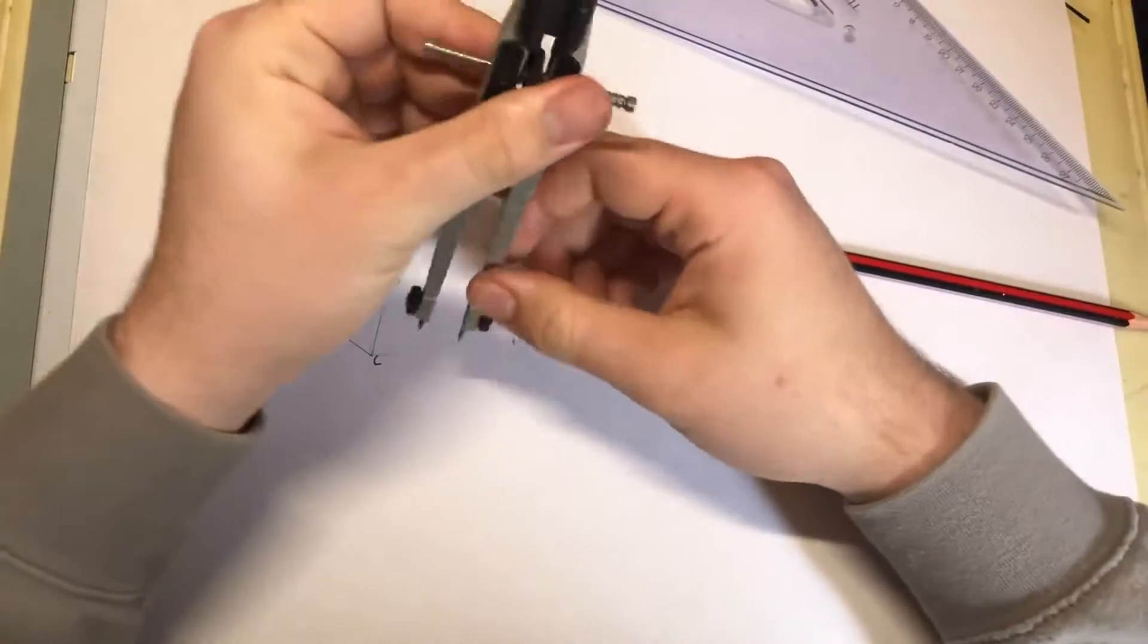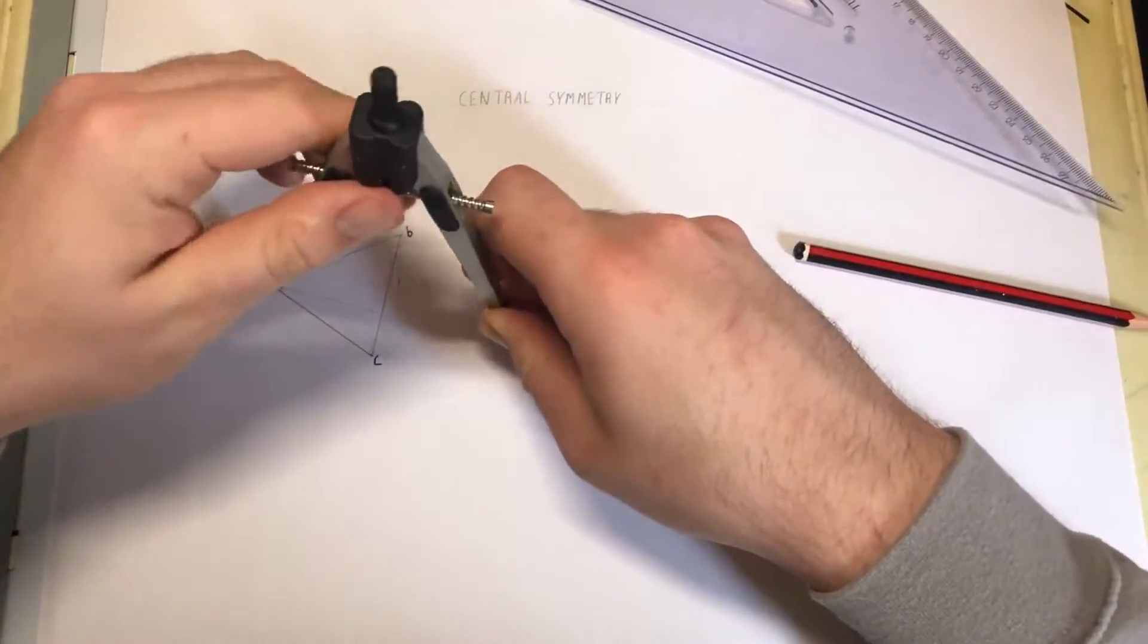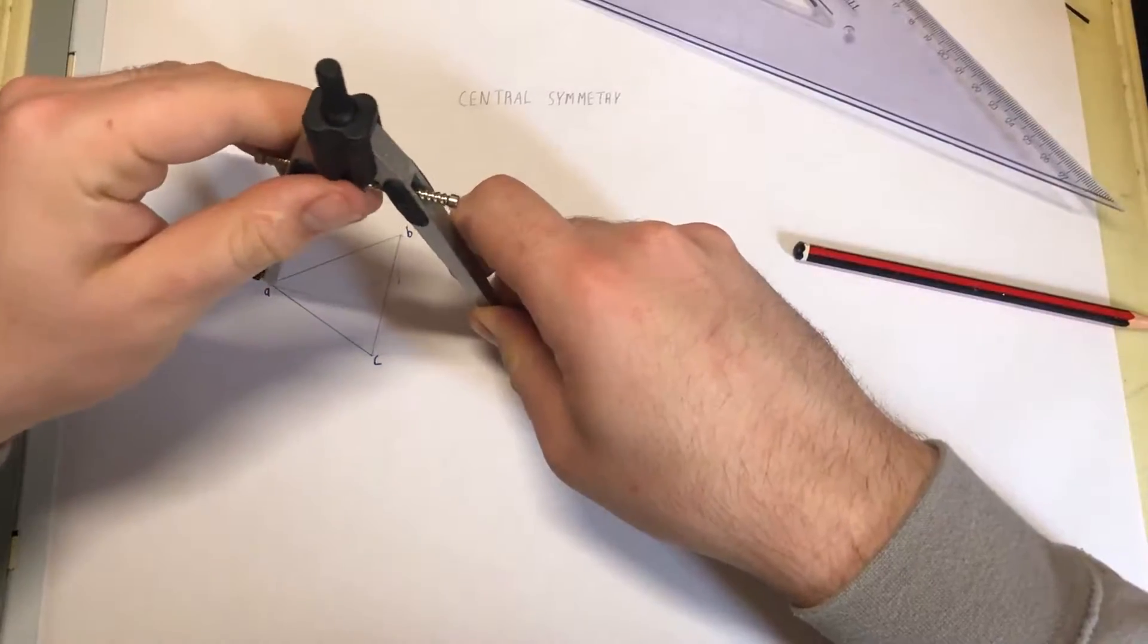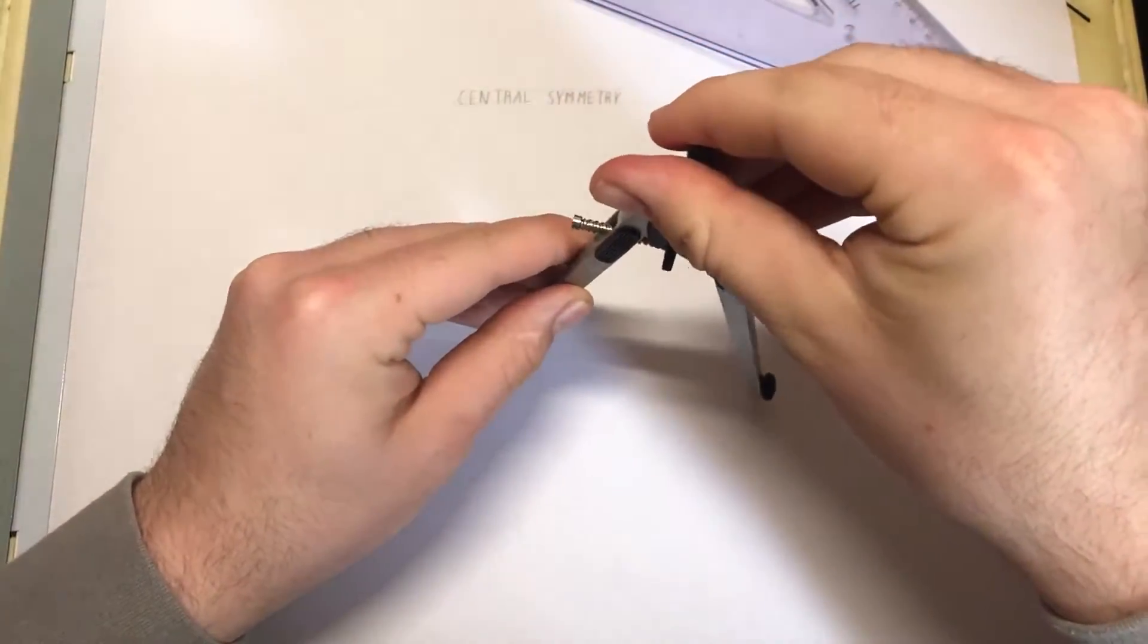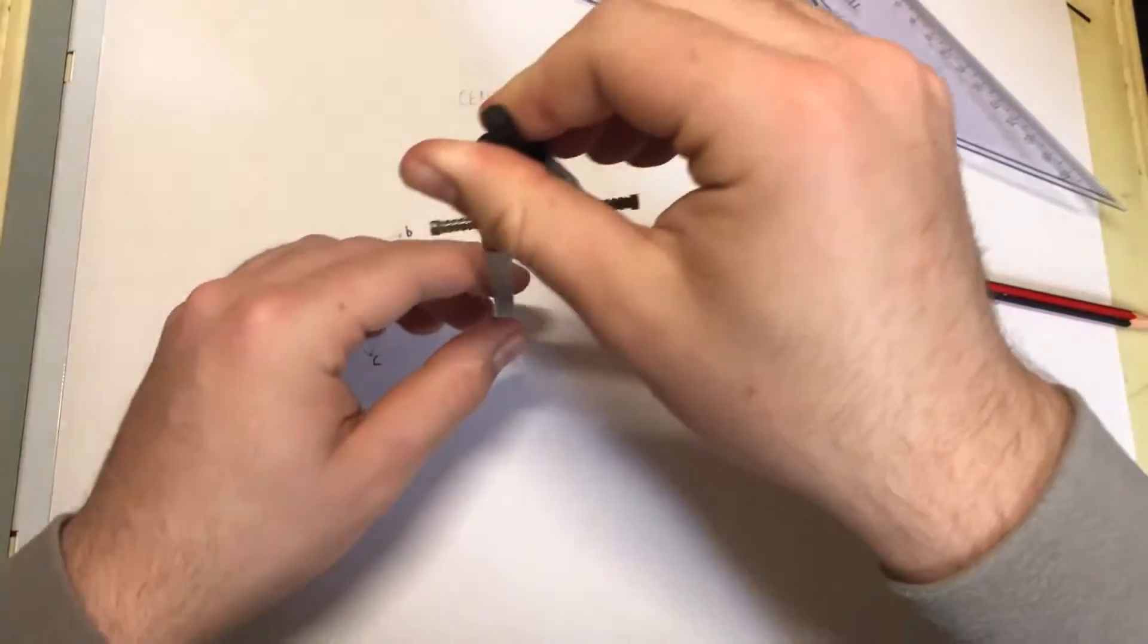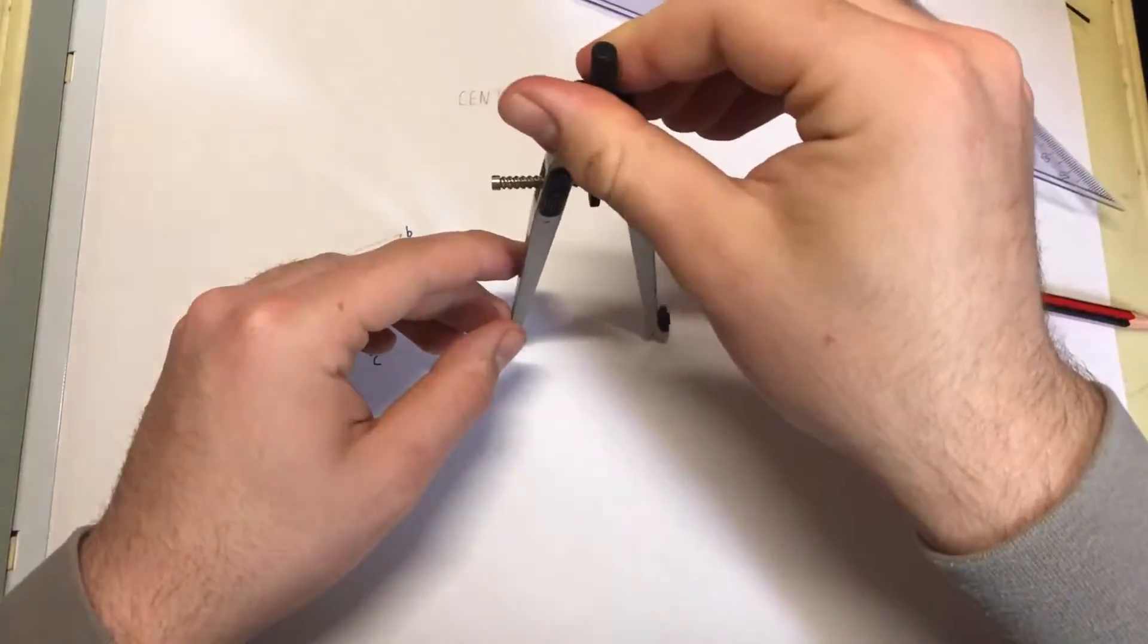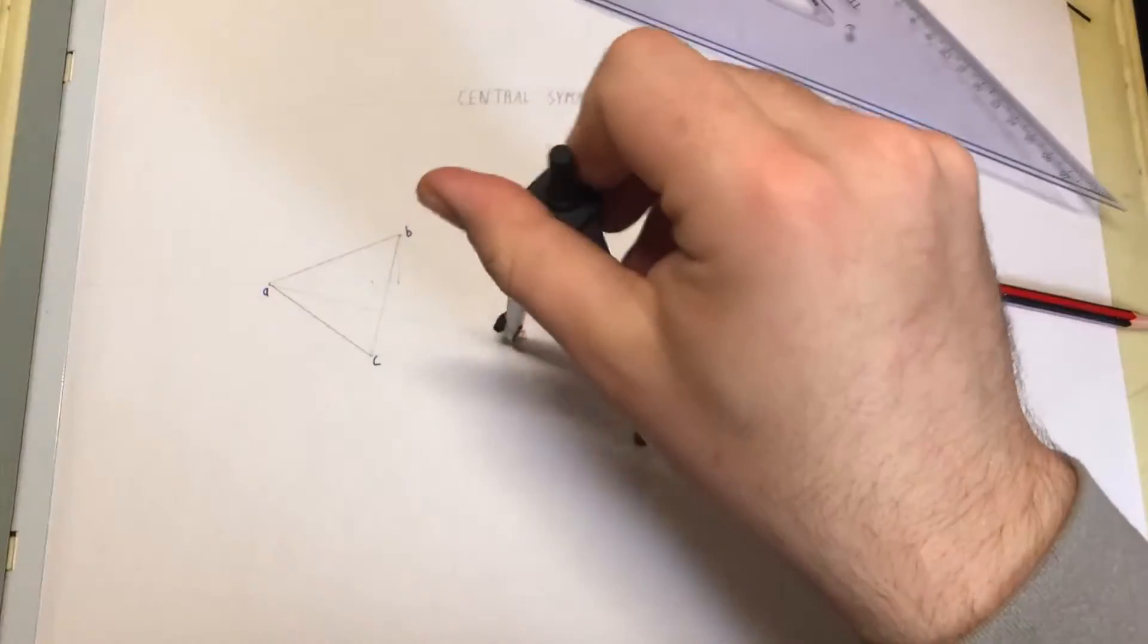Now using your compass, I'm going to get the distance from Z to A and swing that around. I'm going to get the distance from C to Z and swing that about. I'm going to get the distance from Z to B.